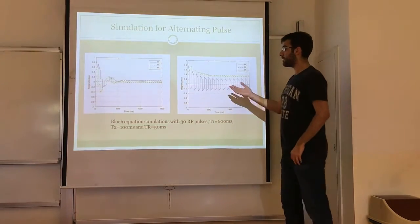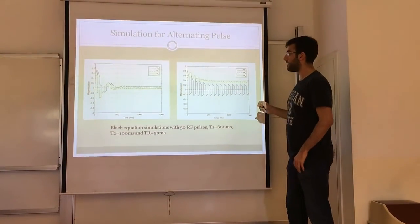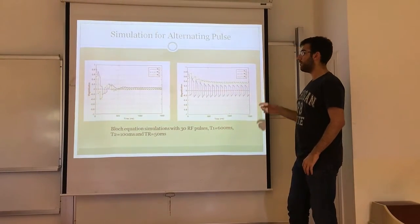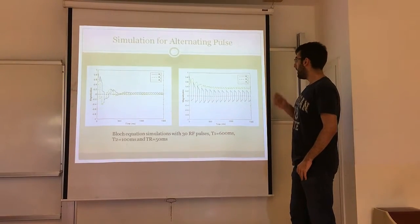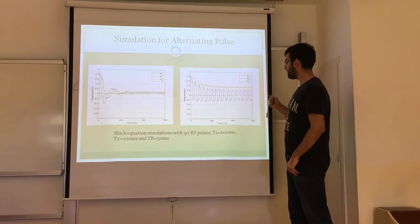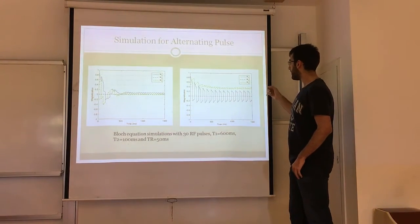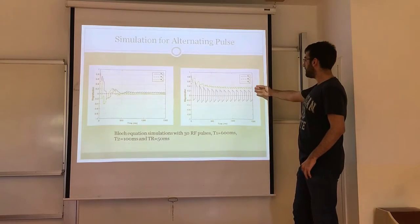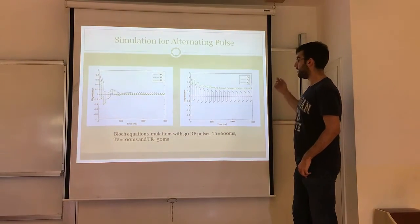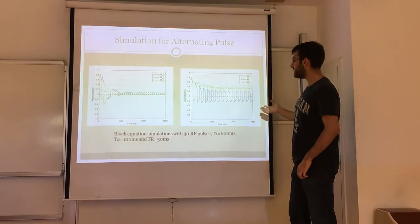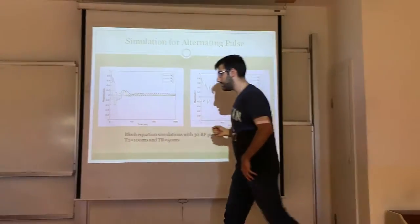This alternating RF pulse technique is very common in very fast imaging techniques. All the RF pulses used here are 60 degrees or minus 60 degrees.